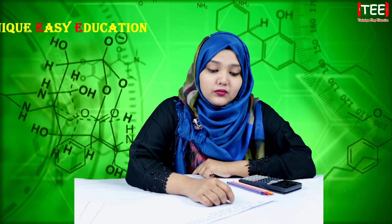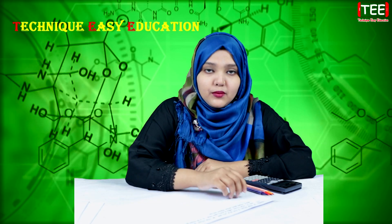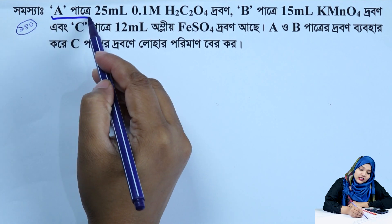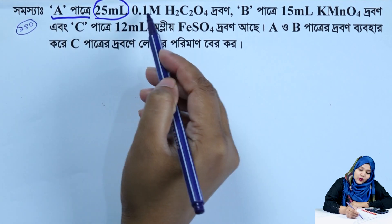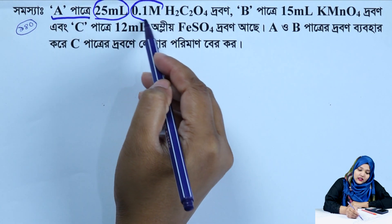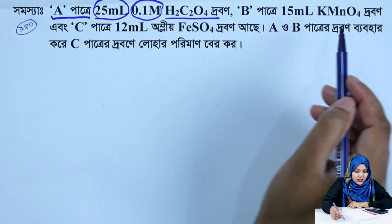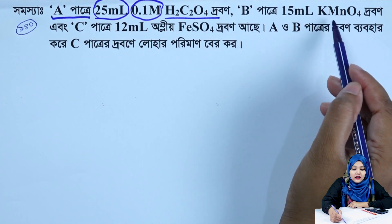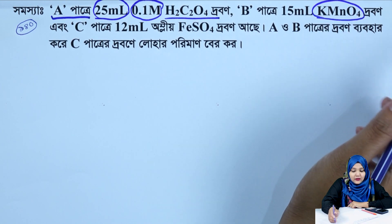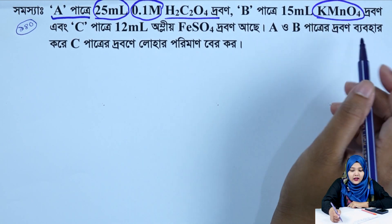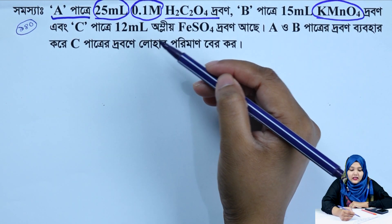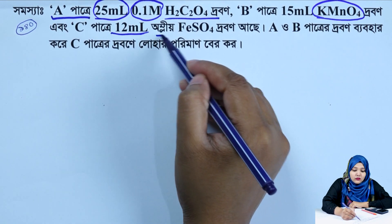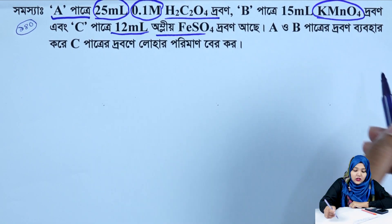Let's see the question. We have to ask the question. A: 25 ml, 0.1 molar oxalic acid solution. B: 15 ml potassium permanganate. And C: ferrous sulfate solution.